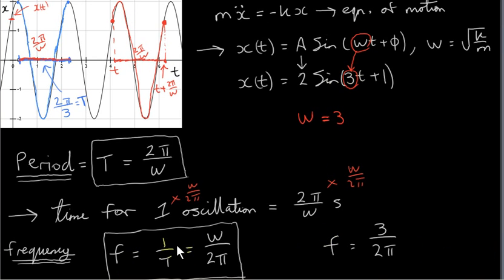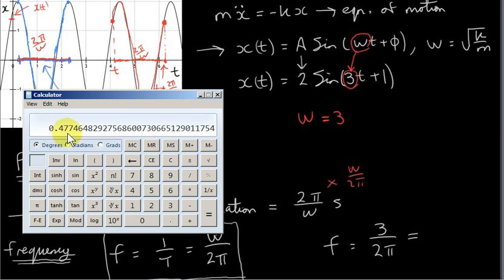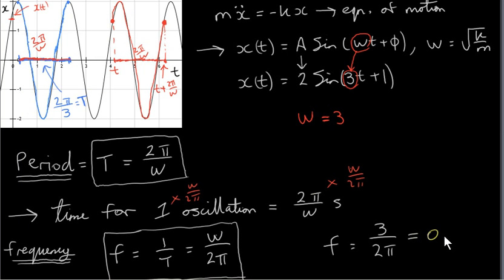In our example, ω is 3, so f = 3 divided by 2π. Getting that as a decimal — 3 divided by 2π — rounding to two decimal places gives 0.48. So the frequency is 0.48 cycles per second, or 0.48 hertz.